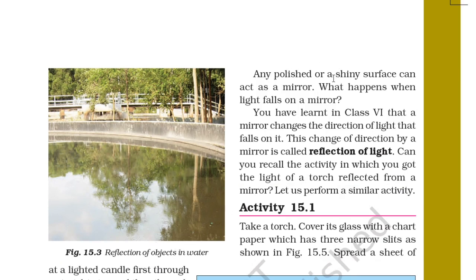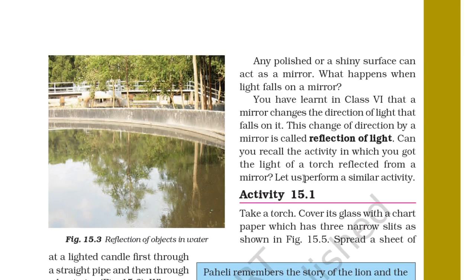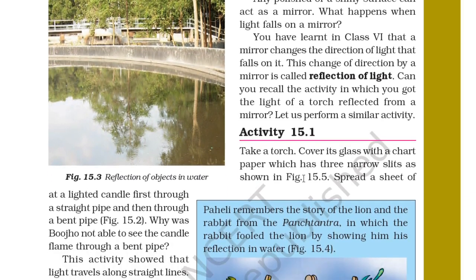Any polished or shiny surface can act as a mirror. When light falls on a mirror, the mirror changes the direction of light — this change of direction is called reflection of light. You have learnt this in Class 6. Can you recall the activity in which you got the light of a torch reflected from a mirror? Let us perform a similar activity.